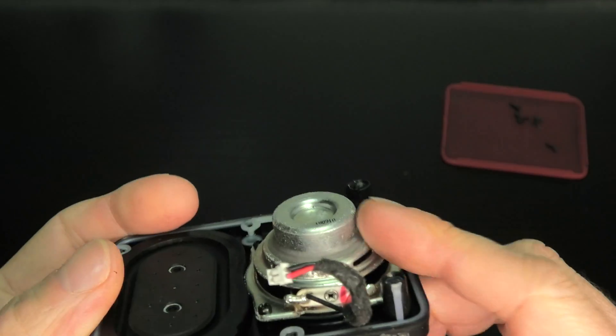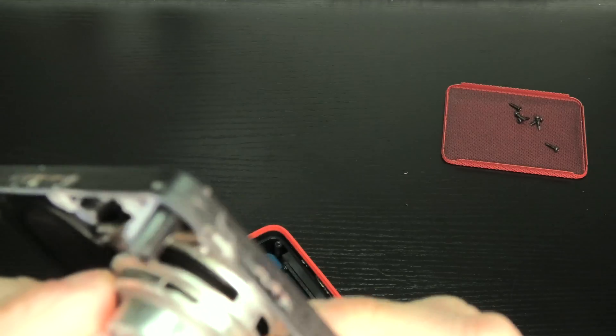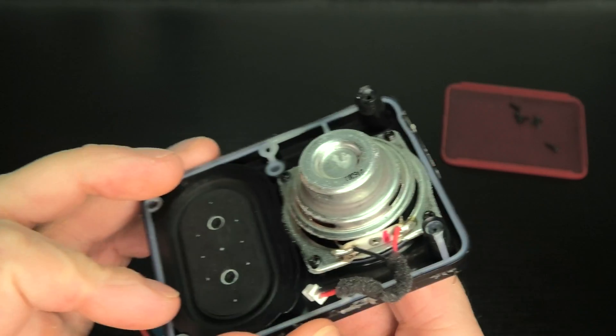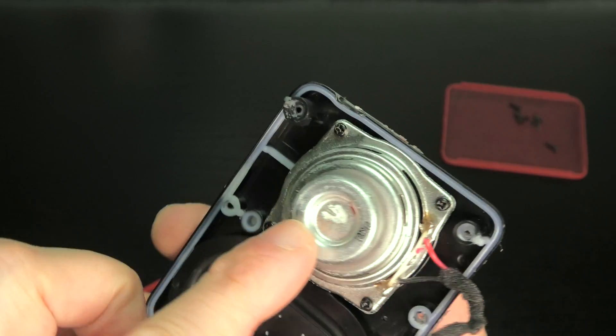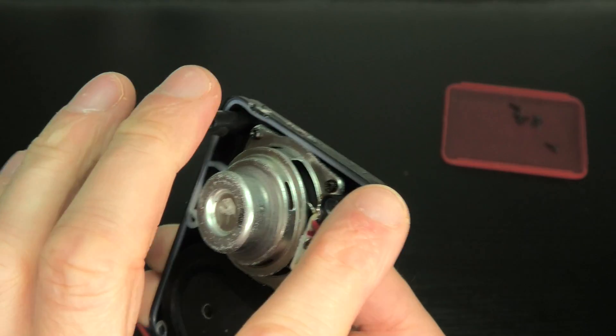Now here we see the transducer from inside, 40mm. And then on the left side we also see the passive radiator. This is what this looks like and you can also see here the seal to make the speaker waterproof.